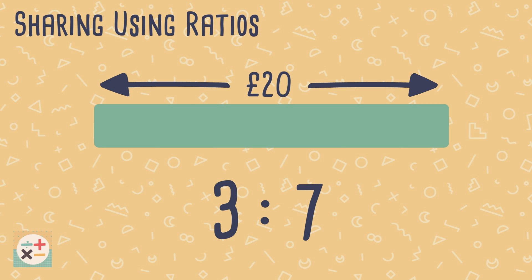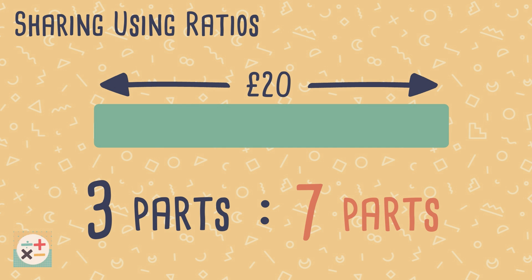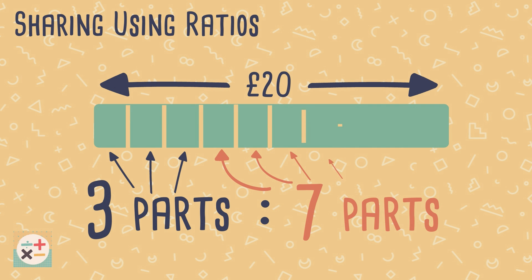For example, the £20 would be the whole amount. We want to share, or divide, the £20 in the ratio 3 to 7. The 3 and the 7 should be considered as parts of the whole. So we divide the £20 up into 10 parts, as 3 plus 7 equals 10.